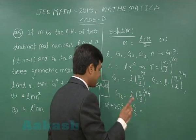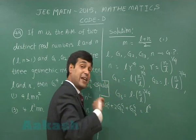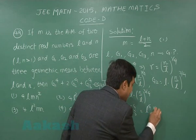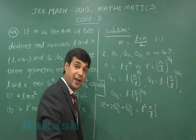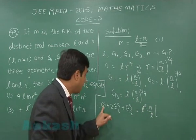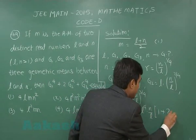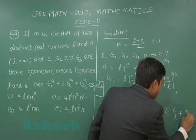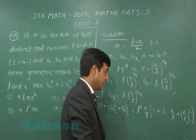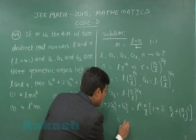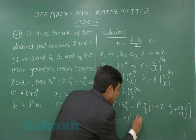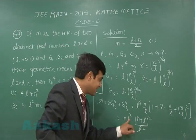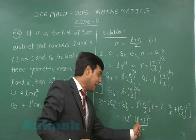We can take L⁴ out as common from each term. Then (N/L) comes common from each part, and we are left inside with 1 + 2(N/L) + (N/L)², which equals NL³ · (N+L)² / L².